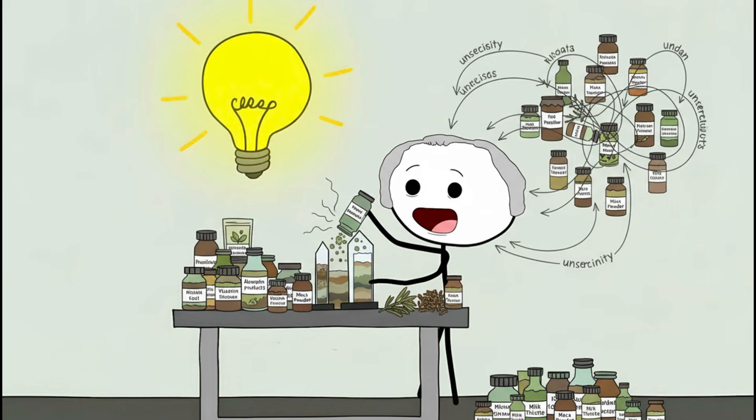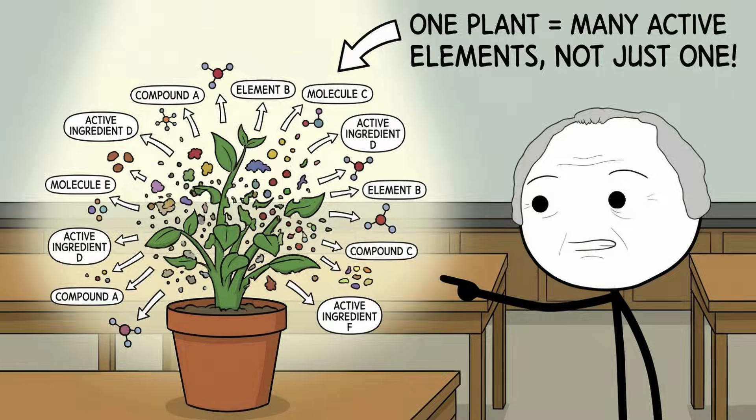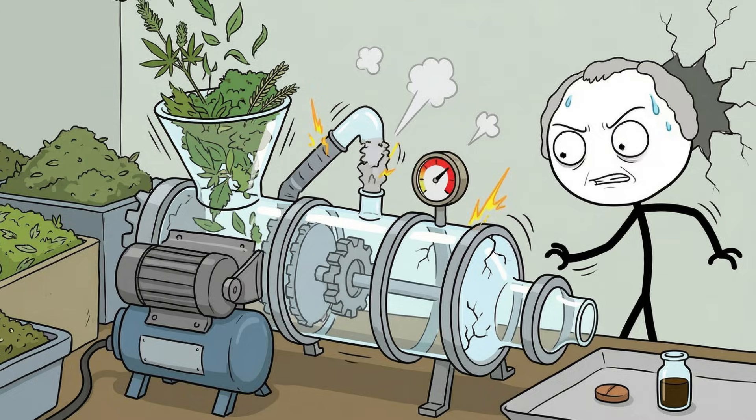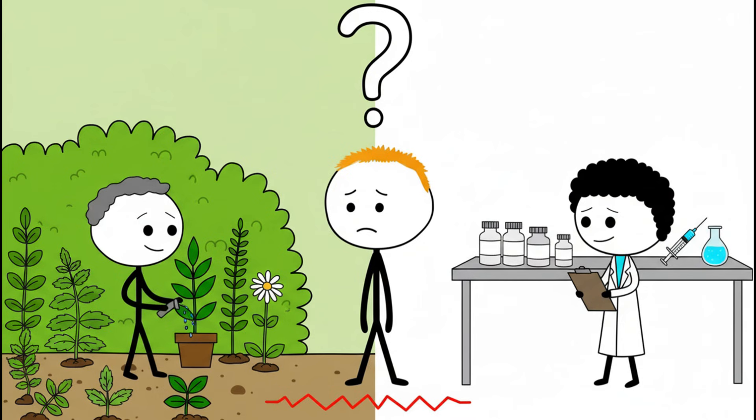Herbal products don't cancel risk. They add variables. Plants contain dozens, sometimes hundreds, of bioactive compounds. Some we understand, many we don't. When you concentrate those compounds into pills, teas, extracts, or superblends, you're no longer dealing with folk remedies. You're dealing with pharmacology without supervision.